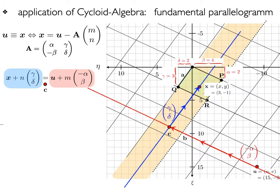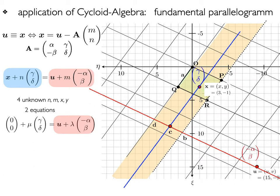However, we have only two component equations, but four unknowns, n, m, x and y. The solution is to consider this green line.